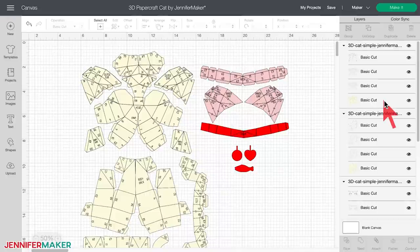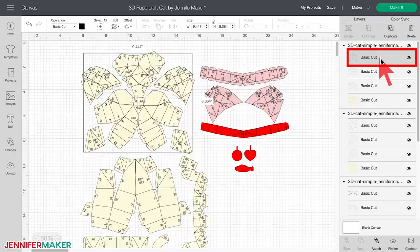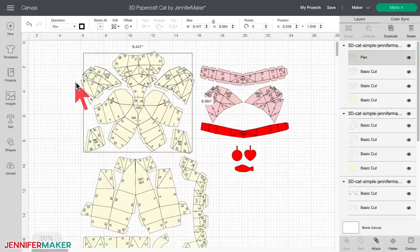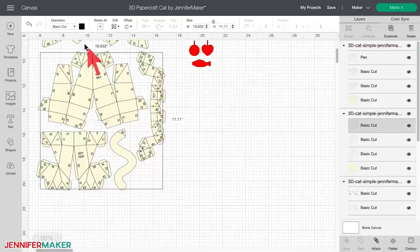So to begin, identify a pen layer at the top of a group like this one. Select it in the layers panel by clicking on it. And then go up to the operation menu at the top of the screen and choose pen. You'll want to do this for all pen layers in all of your groups. Remember, it's the top layer.